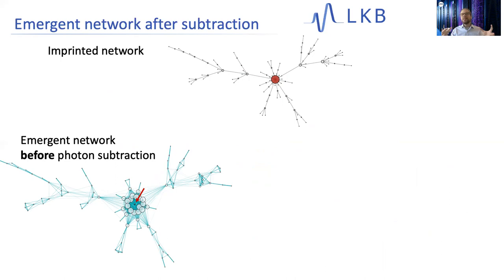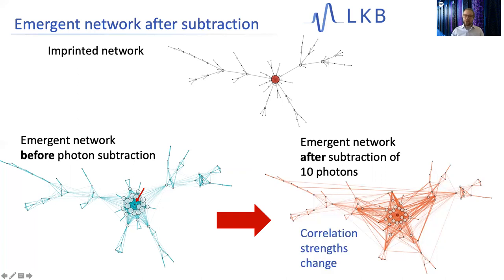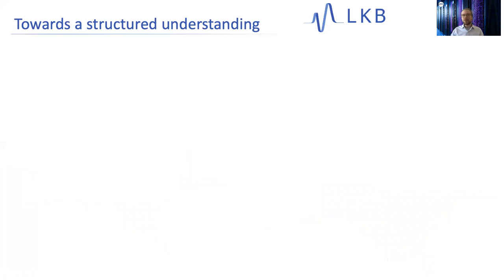Our question is whether we can see this on the level of the emergent correlation network. If we subtract photons, can we see changes appearing in these emergent features? Here I subtract 10 photons at the most correlated node — the hub. After photon subtraction and reconstructing the emergent network, it looks very different: many existing correlations have changed, many have strengthened, and many new correlations have appeared that were not present before.